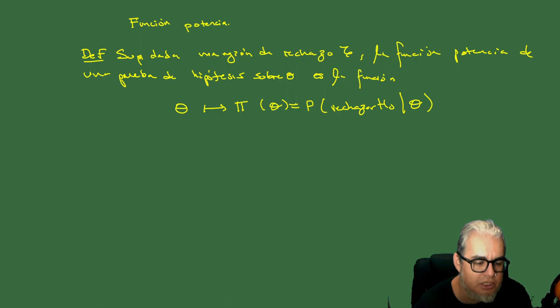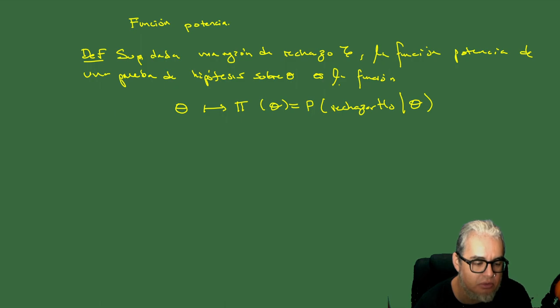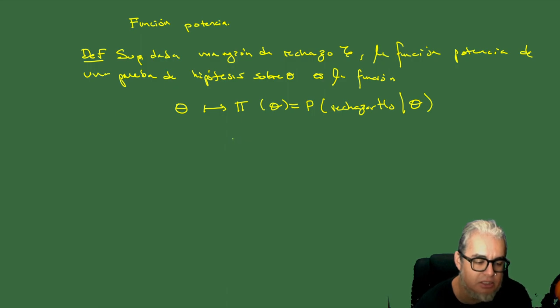Esta función puede ser útil para comparar regiones de rechazo. Por ejemplo, en el caso que tenemos hipótesis simples que se describen con un solo parámetro.